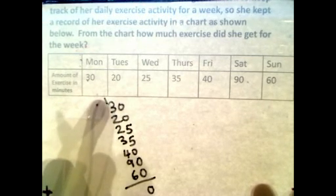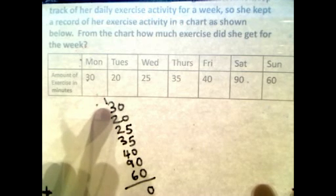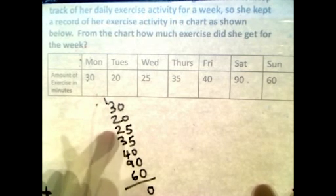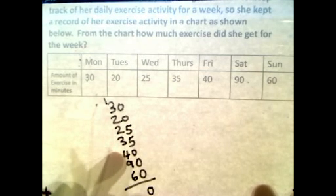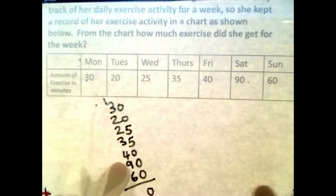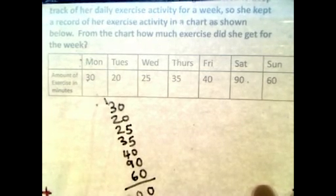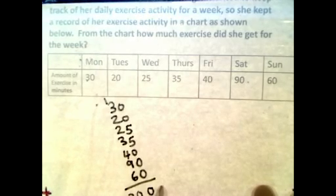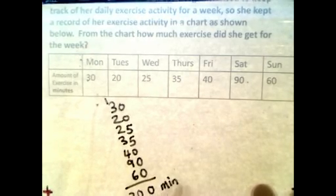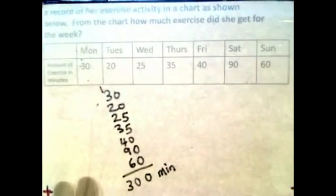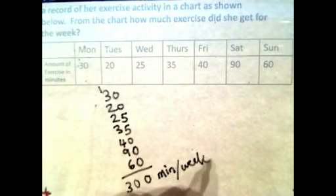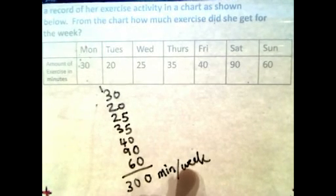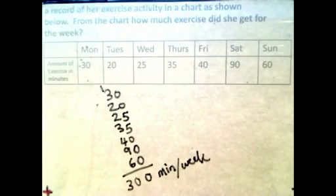That's 10. 1 plus 3 is 4, plus 2 is 6, 8, 11, 15, 20, 24, 30 - 300. That means 300 minutes per week. In other words, she has exercised 300 minutes per week.